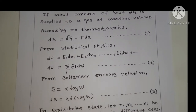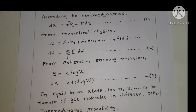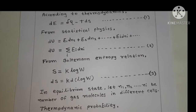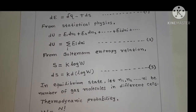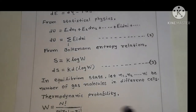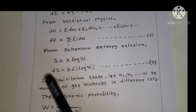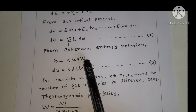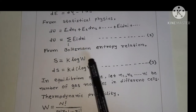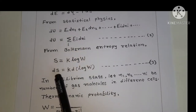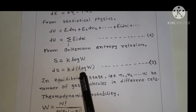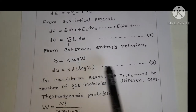From the Maxwell-Boltzmann entropy relation, entropy S is equal to k·log W, where entropy S is related to thermodynamic probability W by this relation. So the change in entropy dS is equal to k·d(log W) — Equation 3.